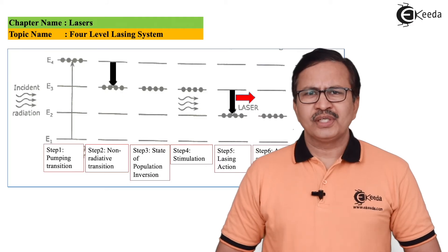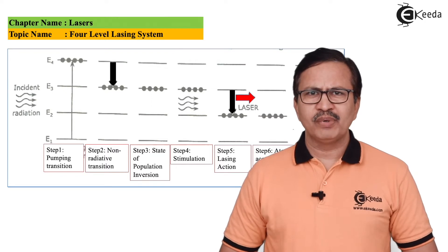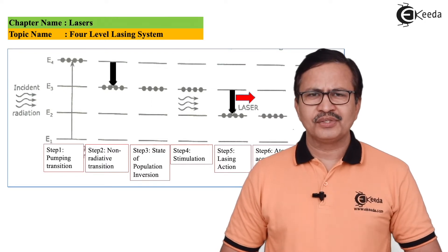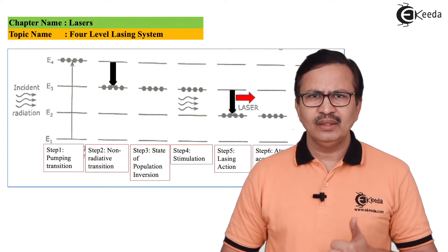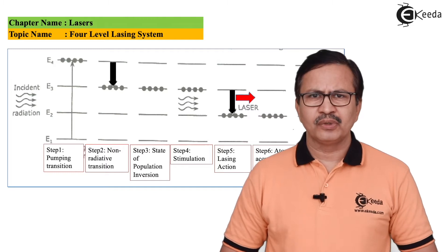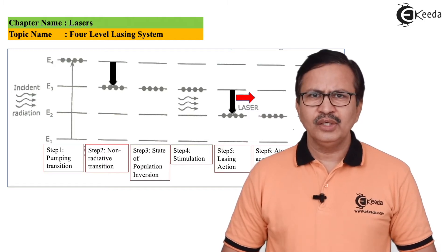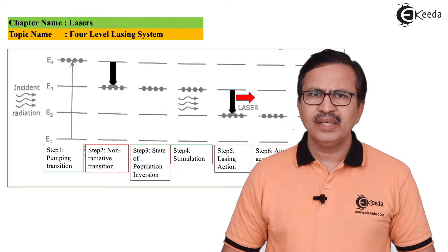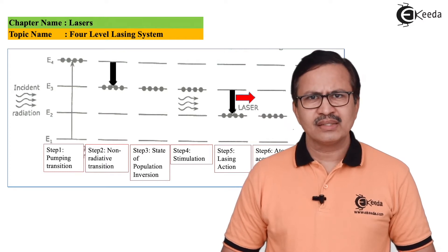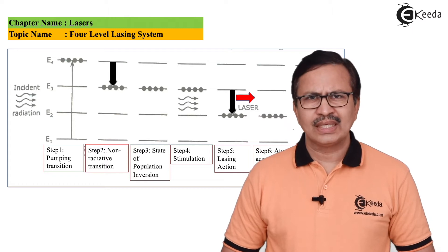As the name says, a 4-level system is comprised of 4 energy level states: E1, E2, E3, and E4. Out of these, E1 is the ground state, E2 and E3 are the intermediate metastable states, and E4 is once again an excited state.